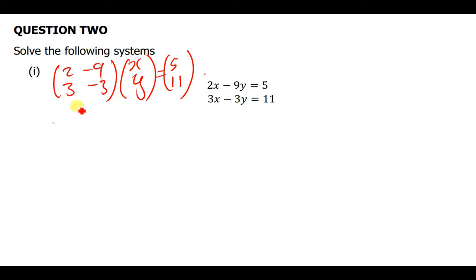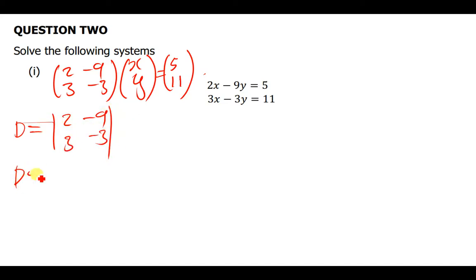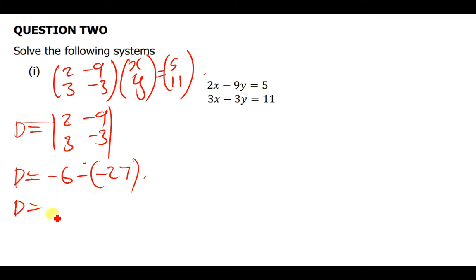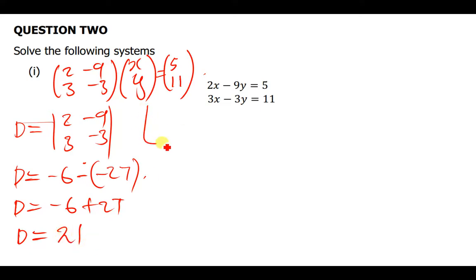We first have to find the determinant of this matrix. D will therefore be equal to the determinant: 2 times negative 3 gives negative 6, minus 3 times negative 9 which is negative 27, so it's minus negative 27. Therefore d equals negative 6 plus 27, which gives us 21.